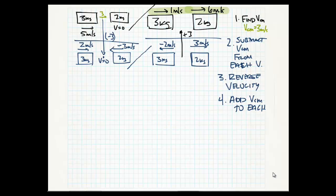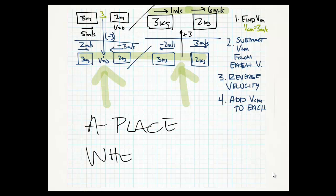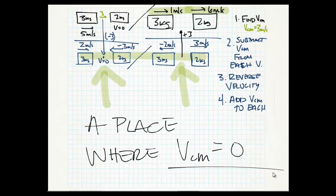Those are the final velocities for the objects. This only applies in the very special case of the elastic collision. The reason it works is because they bounce perfectly off of the center of mass. The whole idea in moving to the center of mass reference frame is to get to a place where we can easily see that, which makes these very simple to do. This is all there is to finding the velocity of objects after they collide elastically.